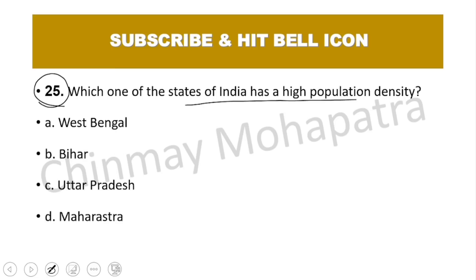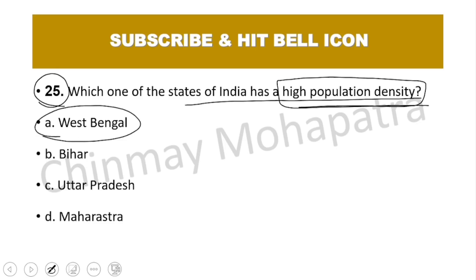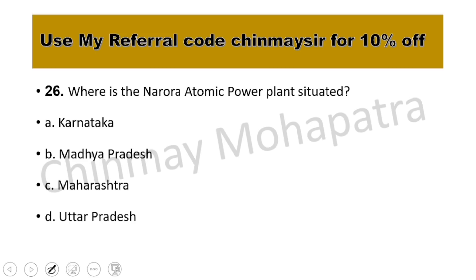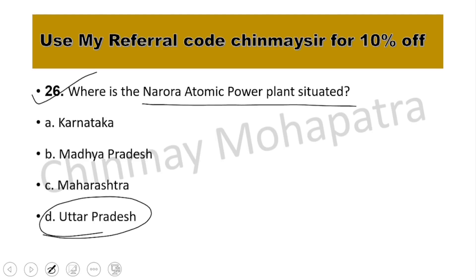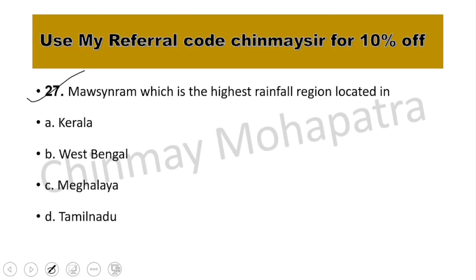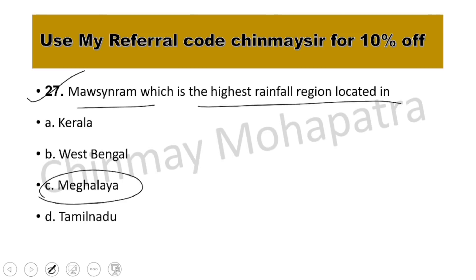Question number 25: Which state of India has the highest population density? The right answer is West Bengal, as per the 2011 census. Question number 26: Where is the Narora Atomic Power Plant situated? The right answer is Uttar Pradesh. Question number 27: Mawsynram, which has the highest rainfall in the world, is located in Meghalaya.